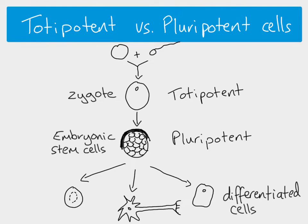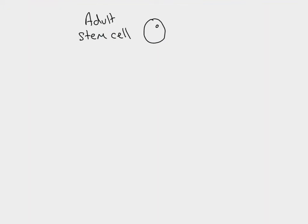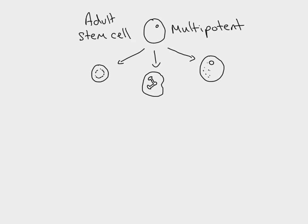Those pluripotent stem cells could eventually differentiate into any kind of cell in the body. However, in adults we don't have any of those totipotent or pluripotent stem cells left — we just have adult stem cells. Adult stem cells are able to divide into a range of closely related cell types. For example, an adult stem cell in the bone marrow, when it divides, could differentiate into a variety of cells such as red blood cells or different kinds of white blood cells. This is what 'multipotent' means — adult stem cells can divide and differentiate into a range of closely related cell types, but not into unrelated cells like neurons.